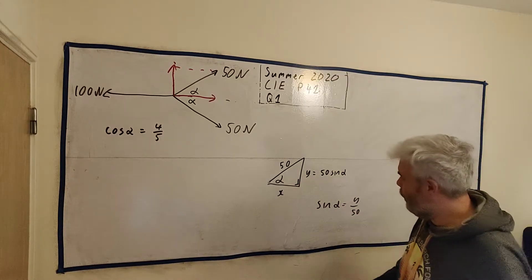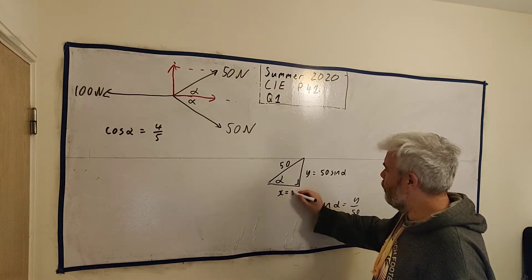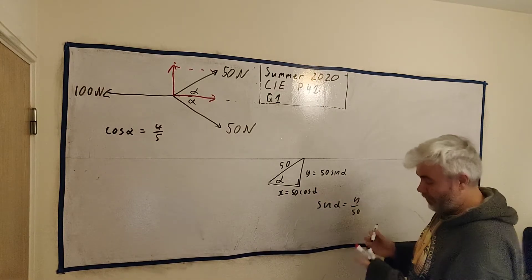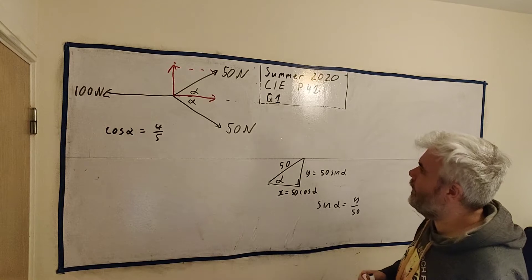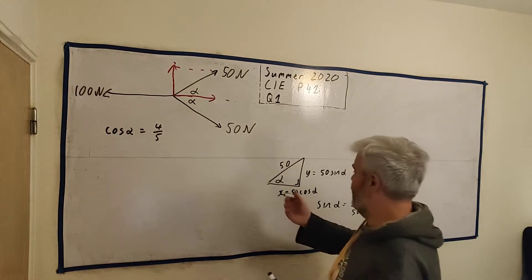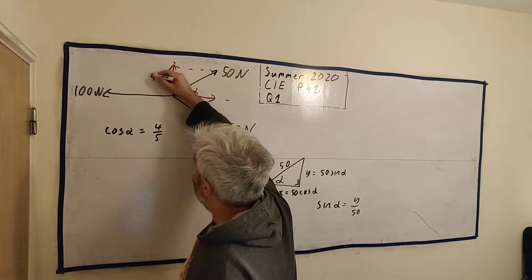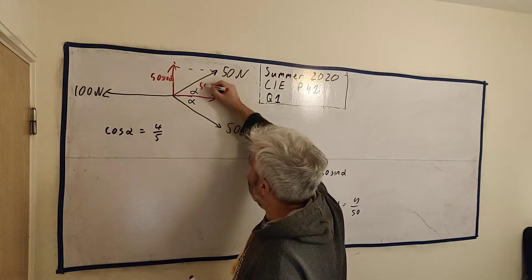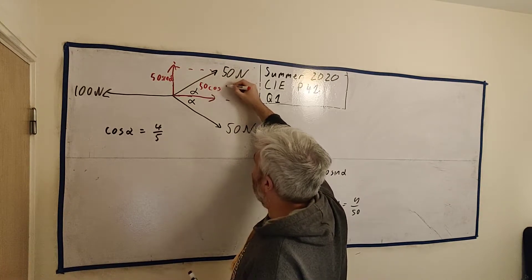And for x, the one that's more important to us here, we'd get x is equal to 50 cosine α. So I'll go ahead and put that in. This one up here was 50 sine α. And this one here will be 50 cosine α.